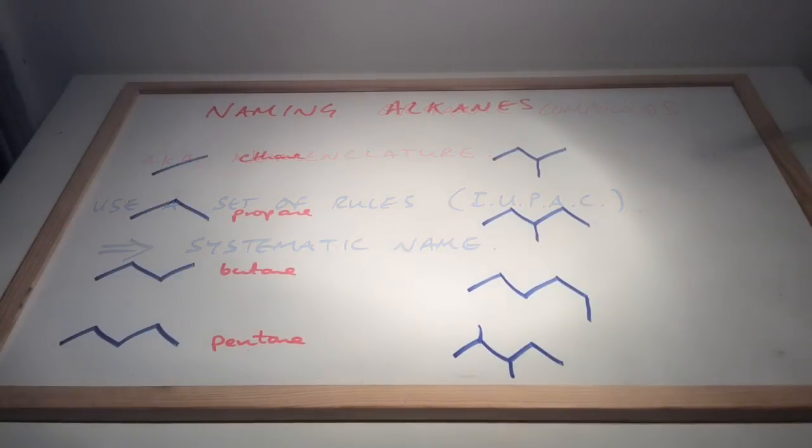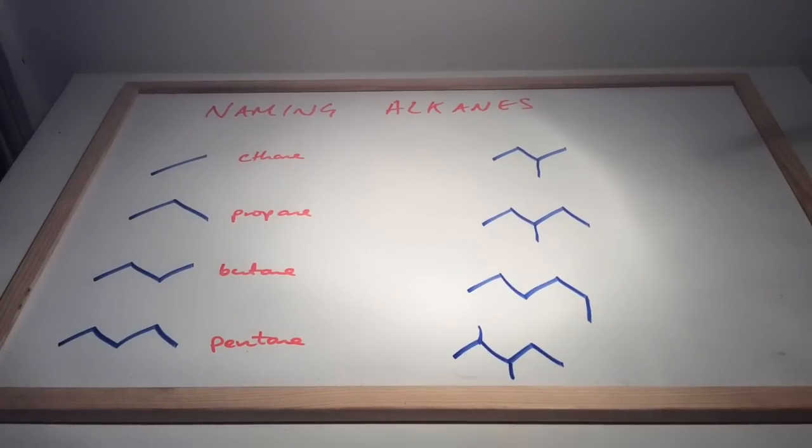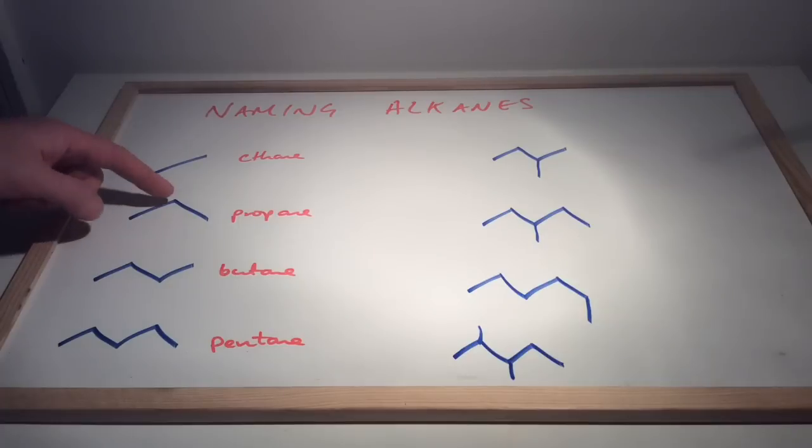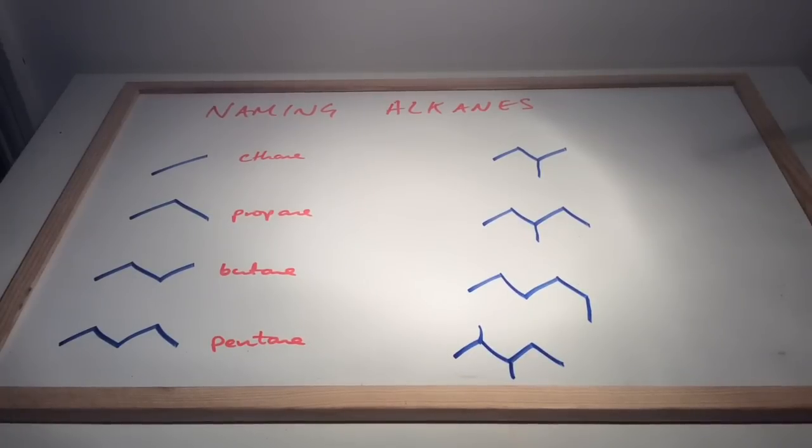If we look at some simple alkanes to get us started, down the left hand side I've got four alkanes. We've got two carbons—that's ethane; three carbons—propane; four carbons—butane; and five carbons—pentane. Obviously if you wanted six, seven, eight, nine, and ten, you would just keep the zigzag going. Now if we have a look at the right hand side, these are what we call branched alkanes.